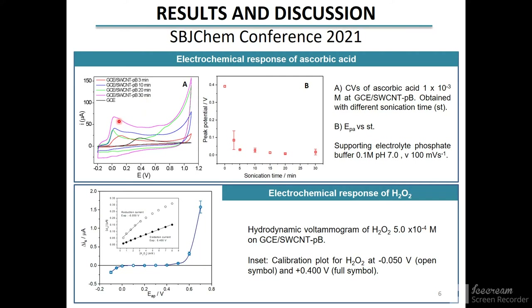Compared with bare glassy carbon electrodes, the electrooxidation of ascorbic acid shows a decrease of the peak potential as the sonication time and the amount of nanotubes exfoliating into the colloidal dispersion increases.